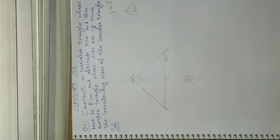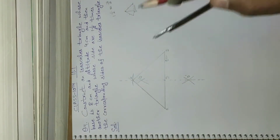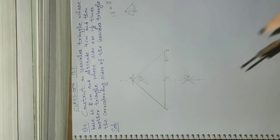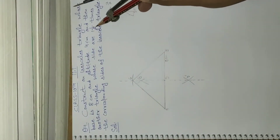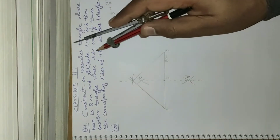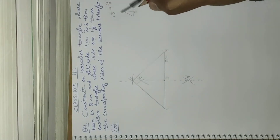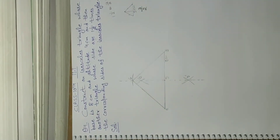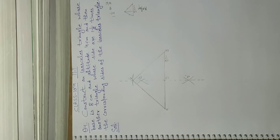In an isosceles triangle, the lengths of two sides are equal. Here AC and CB are of equal length, so triangle ABC is an isosceles triangle. Now we have to construct another triangle whose sides are 3 by 2 times the corresponding sides. Since the numerator 3 is greater than the denominator 2, the new triangle will come outside this triangle.